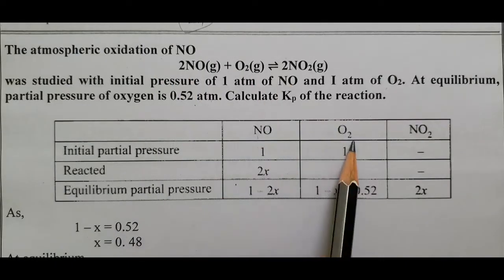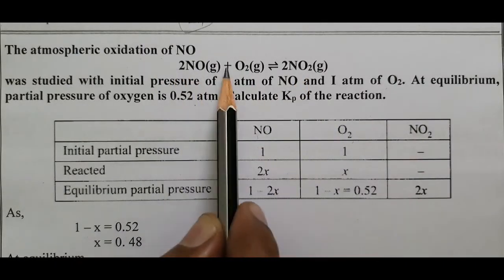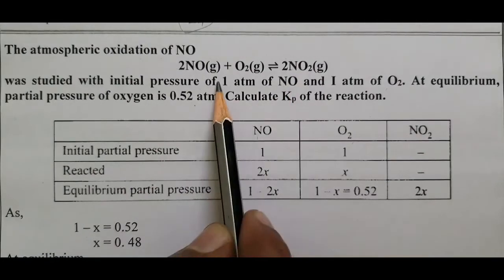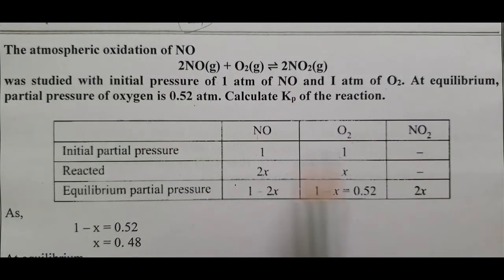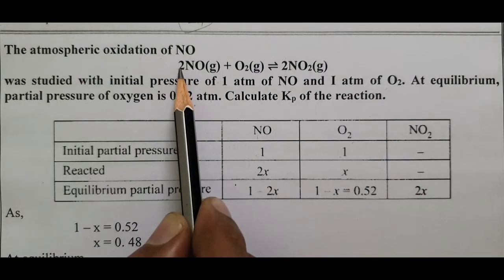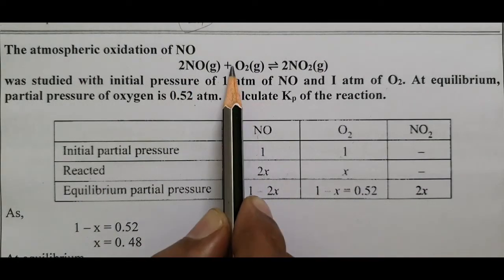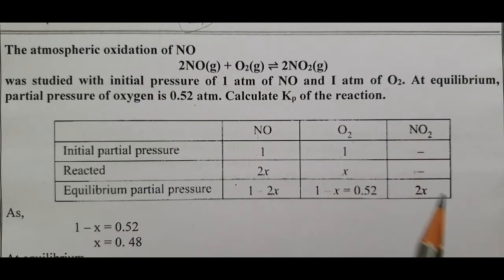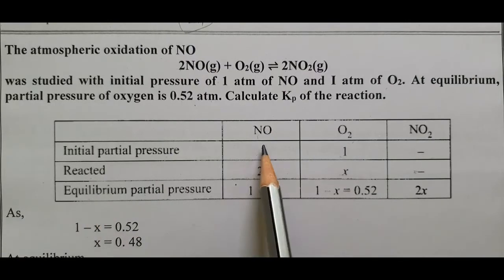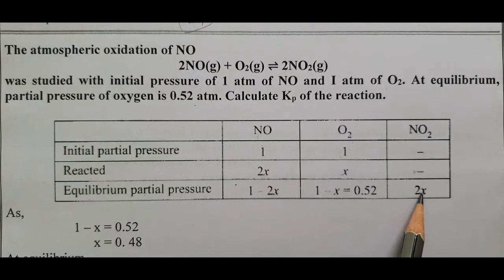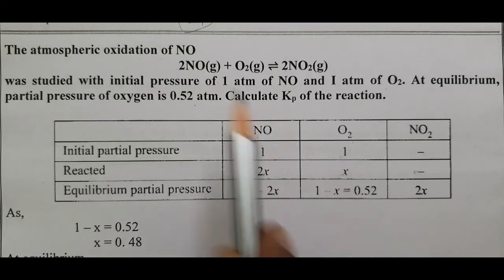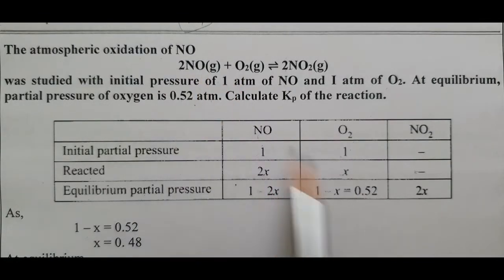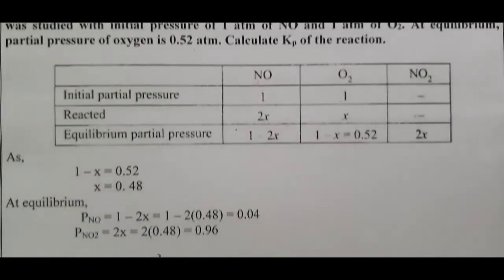Reactants: NO, O₂; product: NO₂. Setting up the ICE table — initial partial pressures: NO = 1, O₂ = 1, NO₂ = 0. Change: NO reacts as 2x, O₂ as x, NO₂ forms as 2x. Equilibrium partial pressures: NO = 1−2x, O₂ = 1−x, NO₂ = 2x. Equilibrium partial pressure of O₂ = 0.52, so 1−x = 0.52.